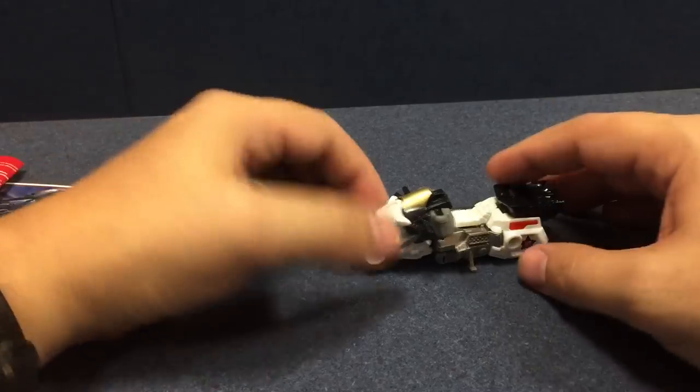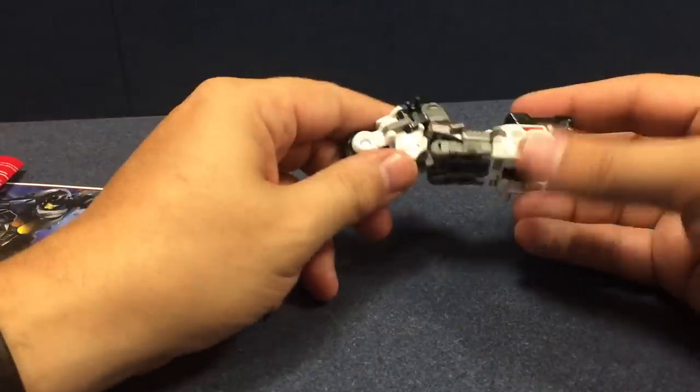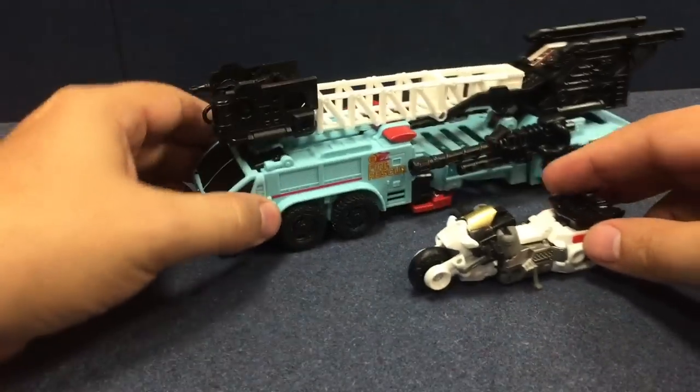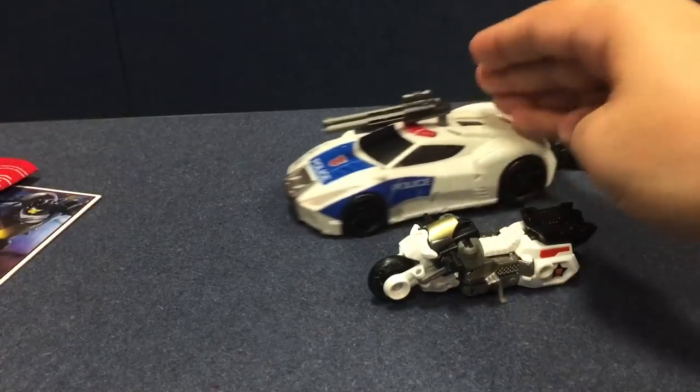But in the American version right now he is a Legends and he forms a little chest plate, much like Blackjack does for Menasor. I mean, he's just a little motorcycle and here he is. I'll show off Hotspot later, but just to give you an idea about how big he is next to Hotspot or next to Streetwise here.